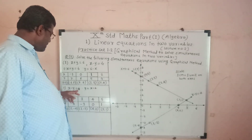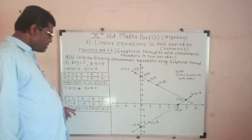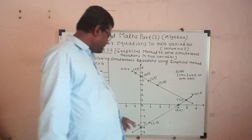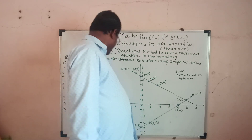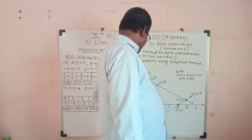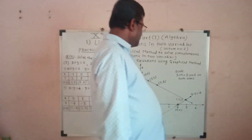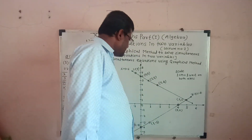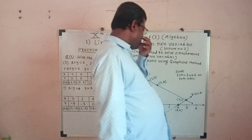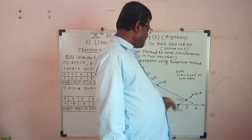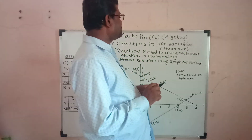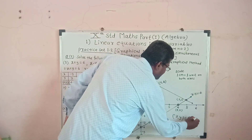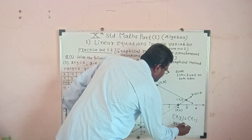For the line x minus y equals 4, plot the points: (0, −4), (1, −3), (4, 0), and (5, 1). Draw the straight line through these points and write the equation x minus y equals 4. The two lines intersect at the point (5, 1). This is the solution of the simultaneous equations: x equals 5 and y equals 1.